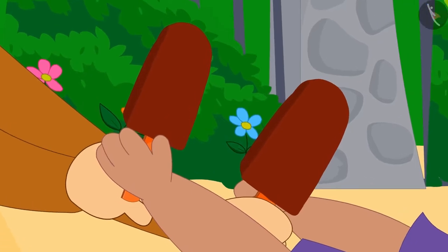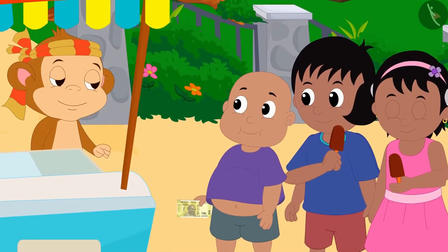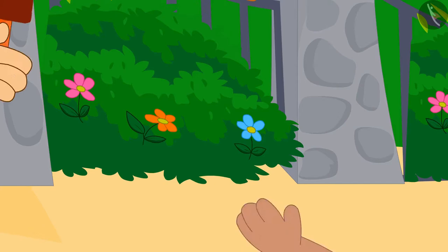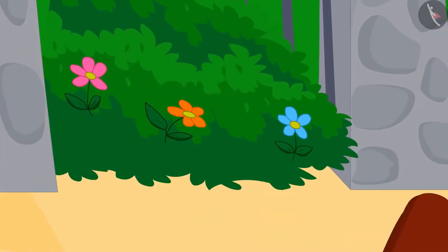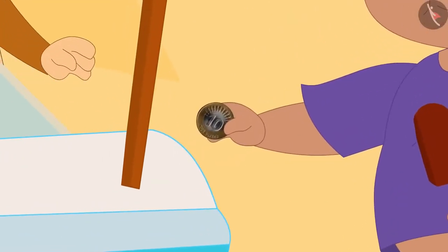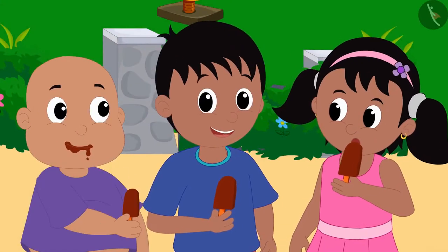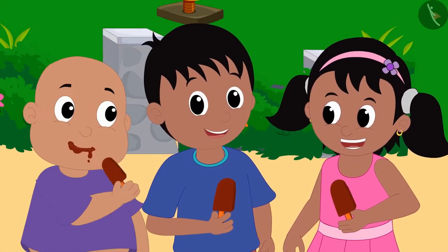Babloo bought two 10 rupee chocobar ice creams from his 20 rupee note and a 10 rupee chocobar ice cream from his 10 rupee coin and together with Pinky and Raju, they ate ice cream with great pleasure.